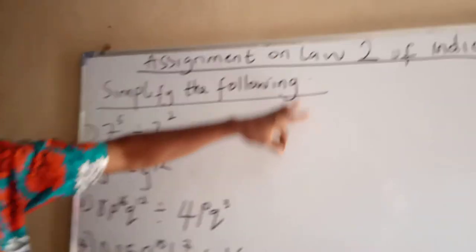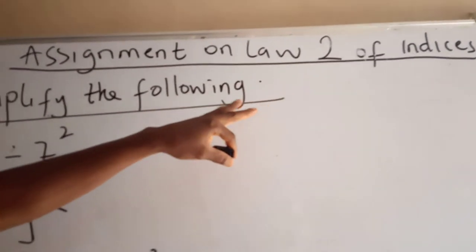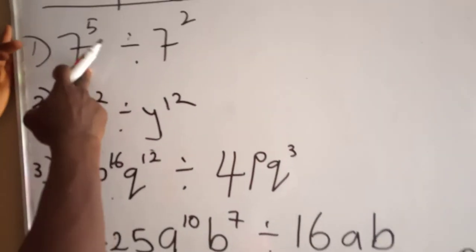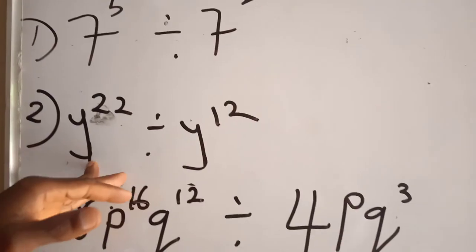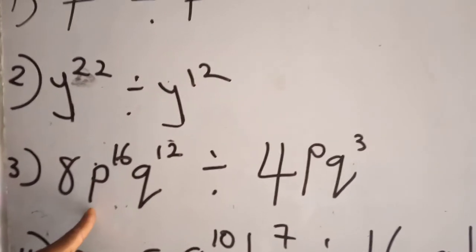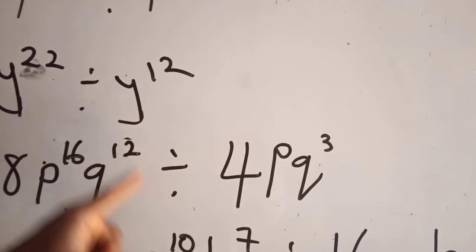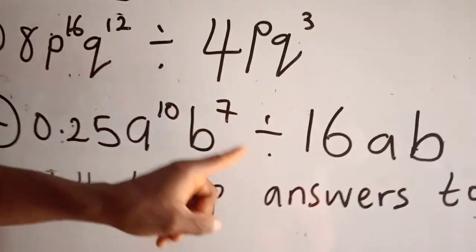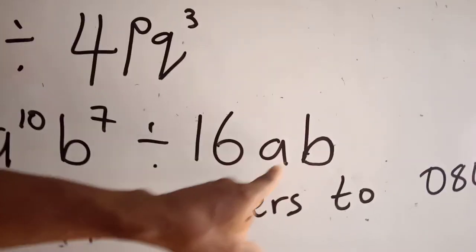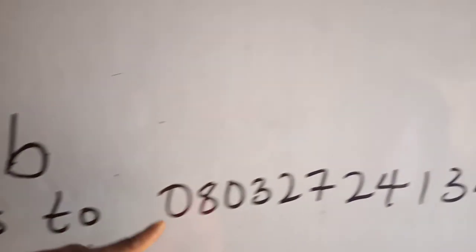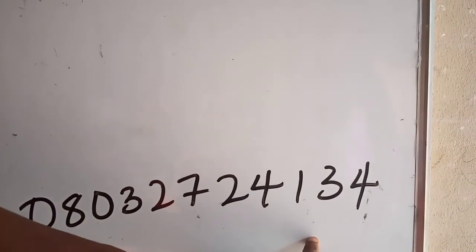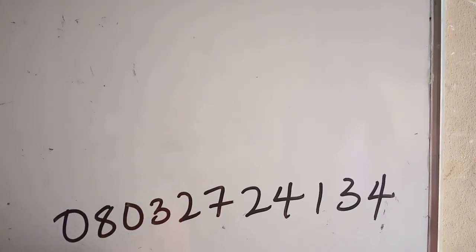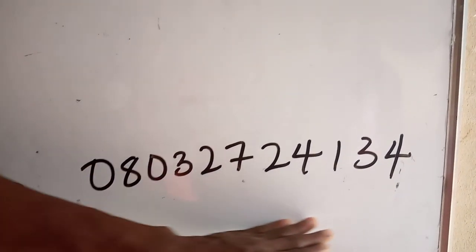Now you have to solve these assignments on the Second Law of Indices. I have 4 questions for you. Number 1: 7 raised to the power of 5 divided by 7 raised to the power of 2. Number 2: Y raised to the power of 22 divided by Y raised to the power of 12. Number 3: 8P raised to the power of 16 times Q raised to the power of 12 divided by 4P times Q raised to the power of 3. Number 4: 0.25A raised to the power of 10 times B raised to the power of 7 divided by 16AB. WhatsApp your answers and solutions to 08032724134. Thank you very much.